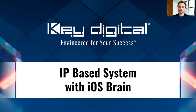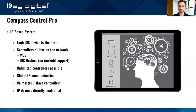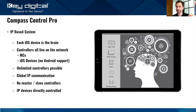Compass Control is an IP-based system with an iOS brain — we rode that initial iOS wave. Everything is solidly network-based in the industry and the world. All the project information loads into each iPad, into each iOS device — not into your master controller or control processor. The master controllers actually just take commands from the iOS device. All the information — not just graphics and variables, but also the commands for controlling each device — loads into the iOS device.